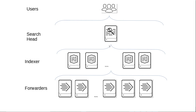What we are doing here is segregating the indexing part and the searching part into two different instances. This is the basic concept of distributed search — separating the searching layer from the indexing layer. We will see this setup today, and when we discuss clustering we will build on top of this setup.